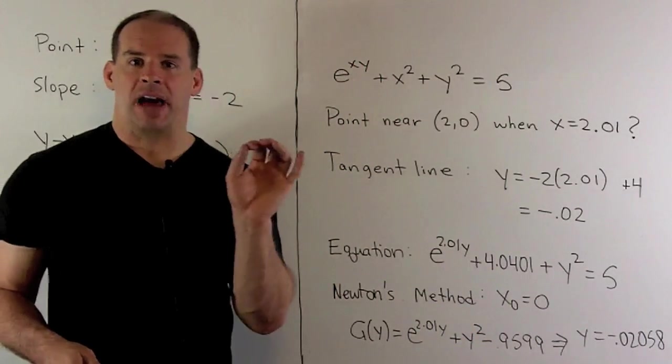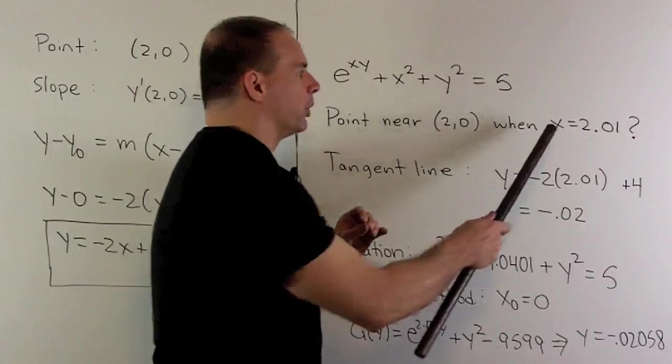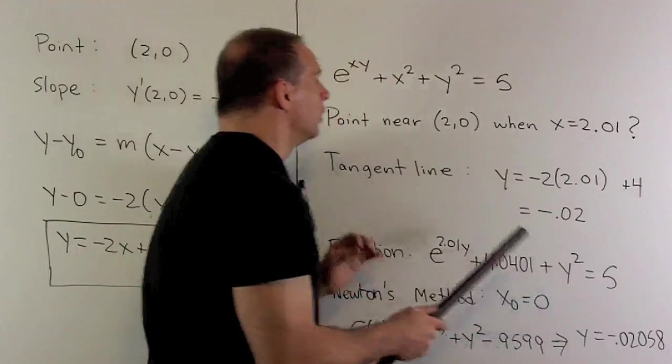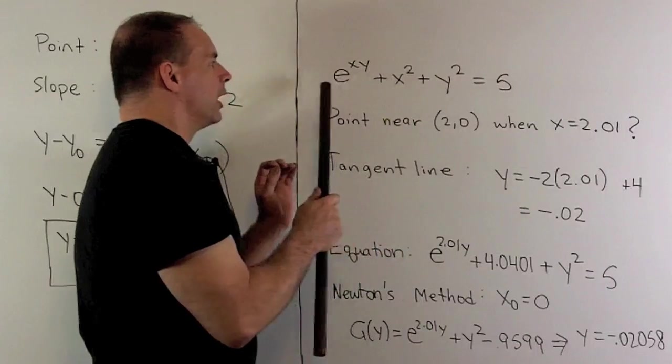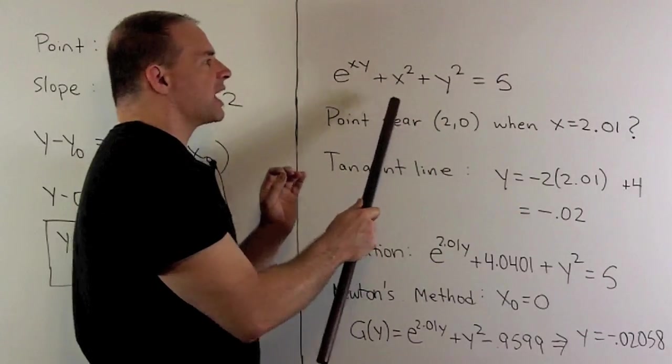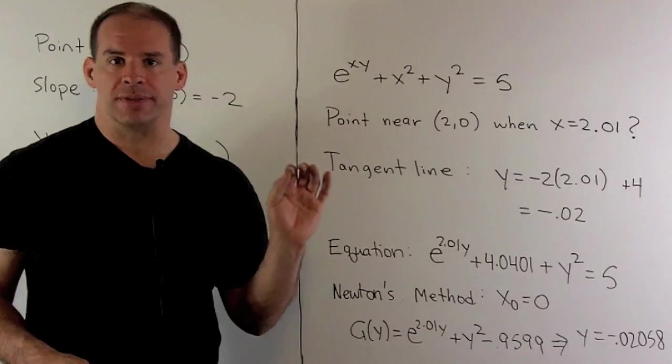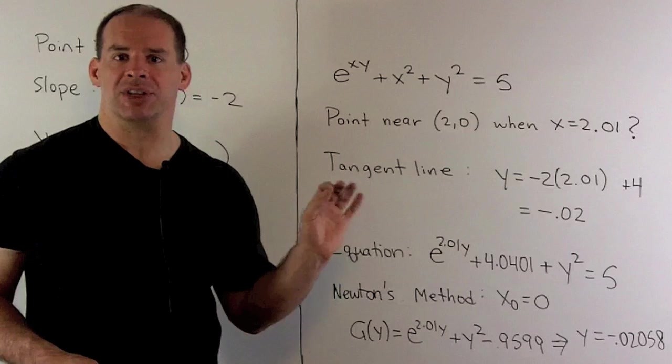It's a final check. You take your 2.01, you take your y here, you put them into the equation, and you'll see what happens on the left hand side comes out very close to 5. So our approximation is not that bad.